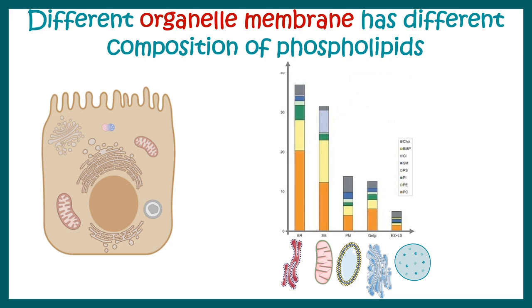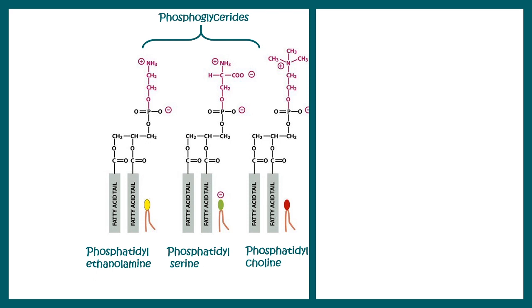Even within a single epithelial cell, the membranes of different organelles — endoplasmic reticulum, mitochondria, lysosome, or peroxisome — each have different proportions of phospholipids like phosphatidylcholine, ethanolamine, or serine. In summary, phospholipids are distributed in a heterogeneous fashion, and their distribution depends on both cell type and organelle. We can broadly classify phospholipids into two categories.